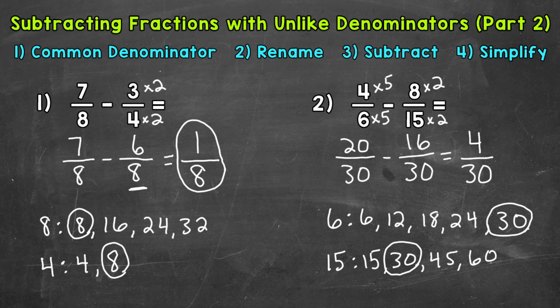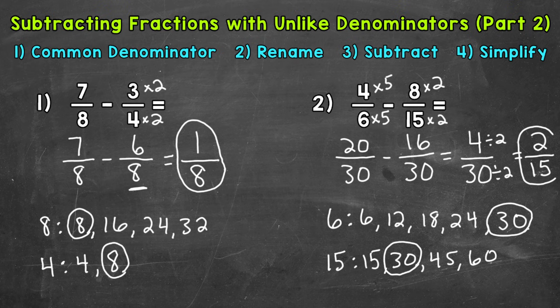But we can simplify. 4 and 30 have a common factor of 2. So let's divide both by 2. And this will give us the simplest form. So 4 divided by 2 is 2. 30 divided by 2 is 15. So our final simplified answer is 2/15.